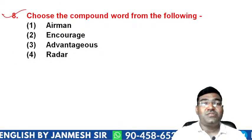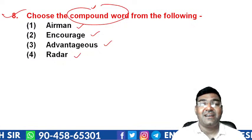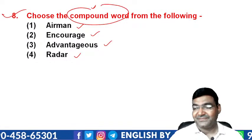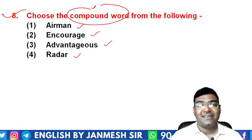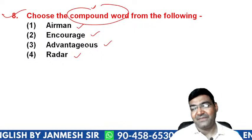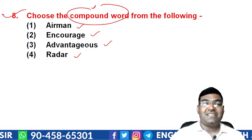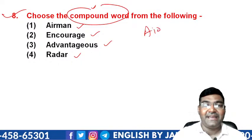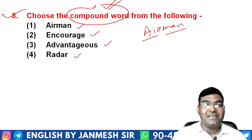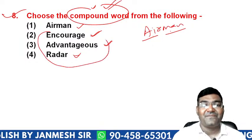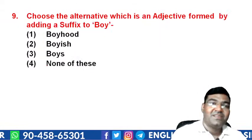Question 8: choose the compound word from the following — 'airman', 'encourage', 'advantageous', or 'radar'. A compound word is formed by joining two complete words. 'Airman' is made of 'air' and 'man' — two words joined together to form a compound noun. 'Encourage', 'advantageous', and 'radar' are not formed this way. So the answer is option 1 — 'airman'.